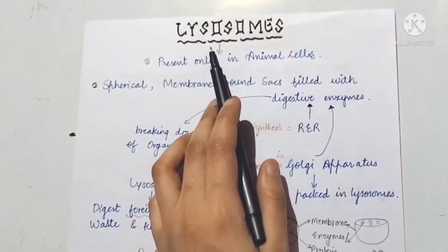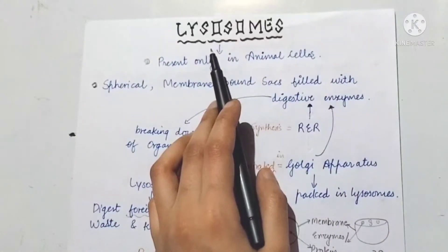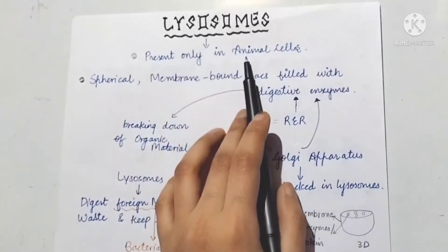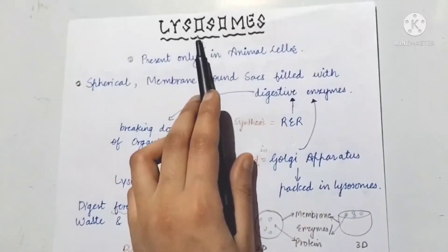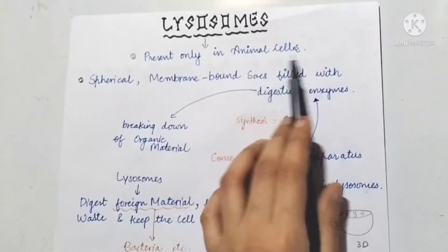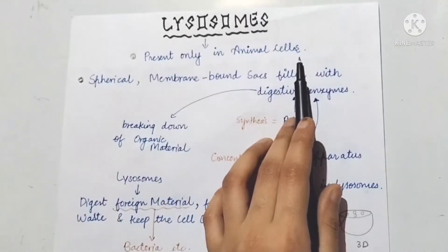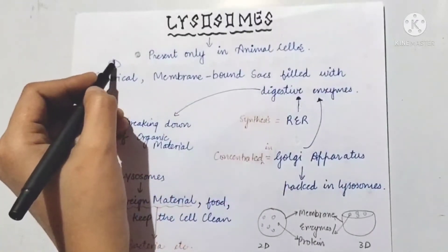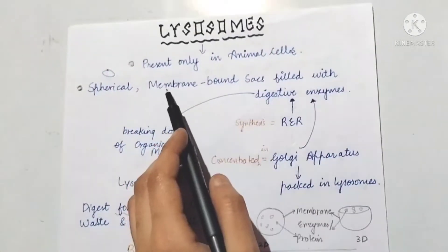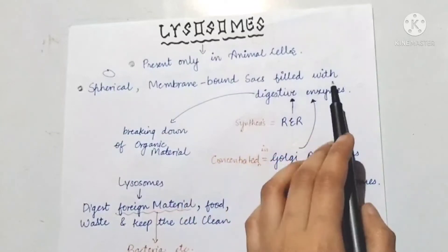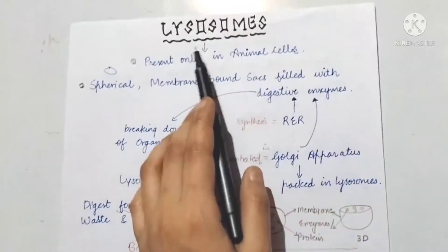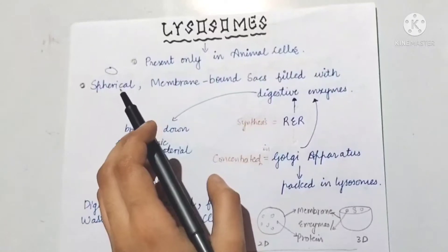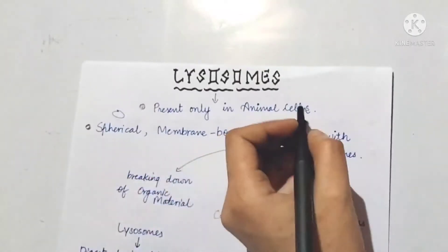Lysosomes are a very interesting cell organelle. They are only present in animal cells — not in plant cells. They are spherical, membrane-bound organelles filled with digestive enzymes. Lysosomes are single membrane-bound cell organelles.